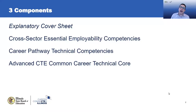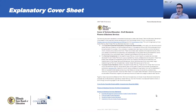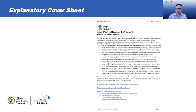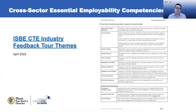Each of the documents, while maybe different lengths, has a number of things in common. They use the same structure, and there are three main content components. First, there is a cover sheet that provides background information as to where this has come from and what the different elements are. Throughout this cover sheet there are hyperlinks, and the bottom portion is essentially a linked table of contents — clicking those links will take you directly to the relevant page. While these documents can be printed, they are intended to be electronic documents to take advantage of the hyperlinks. When we move to page two, we get into the cross-sector essential employability competencies, also referred to as the essential skills.